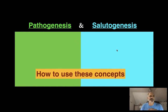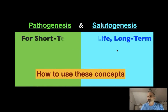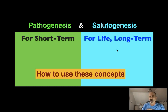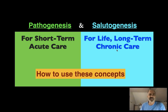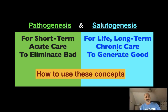How do we use pathogenesis and salutogenesis in practice? This is the new update. Pathogenesis is really for the short term — if something bad happens to me, I want to be treated quickly and right away. Salutogenesis is for life, for the long term. So pathogenesis is about acute care; I don't want someone thinking salutogenically if I've been in a car accident — I want immediate care. Salutogenesis is really about chronic care: how do we do daily things to create a better life? Pathogenesis eliminates bad; salutogenesis generates good.